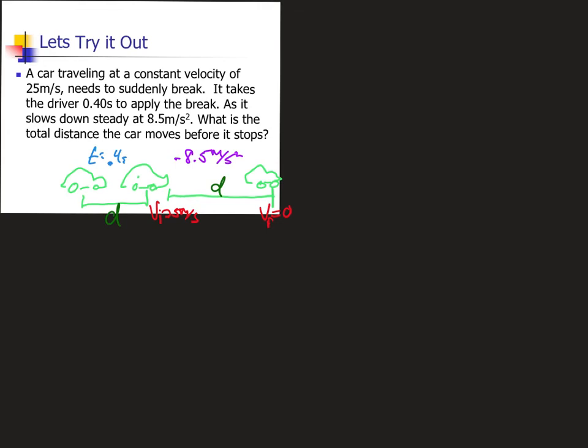Now, the equations that we use will be pretty straightforward. First one that we will use will be the most simplest one and that will be the distance is equal to velocity times time. That will give us 25 meters per second times the time of 0.4 seconds.